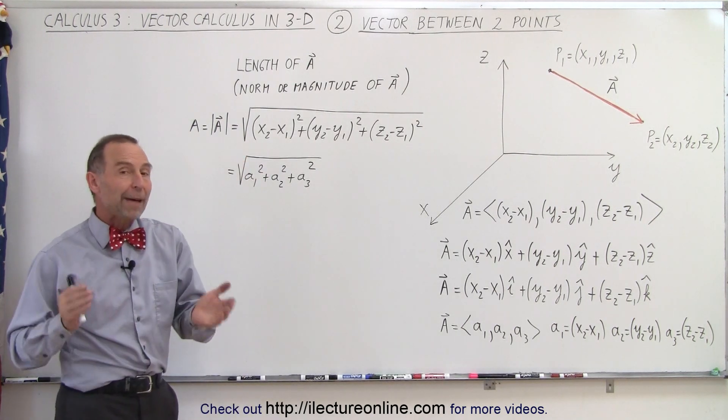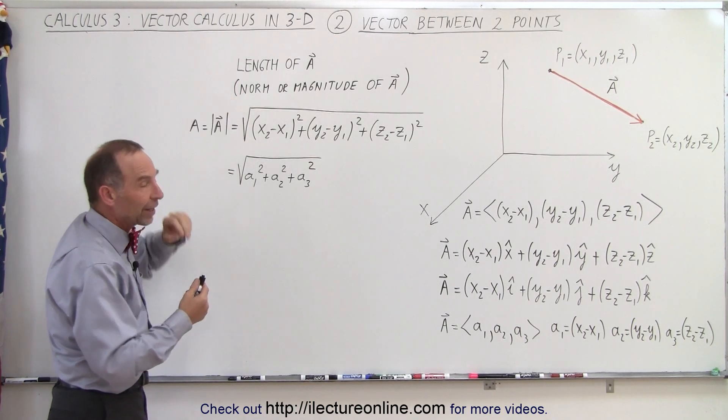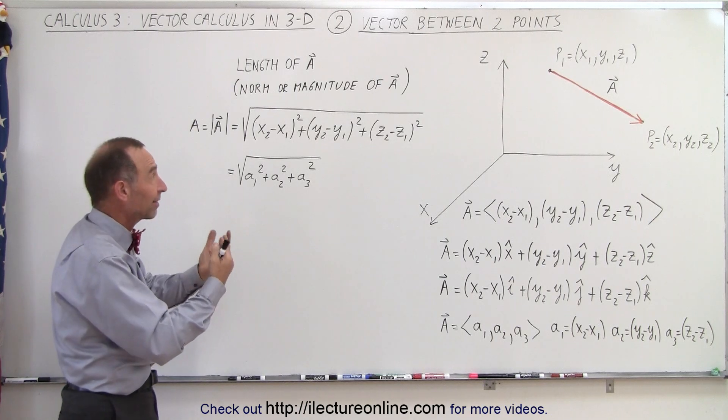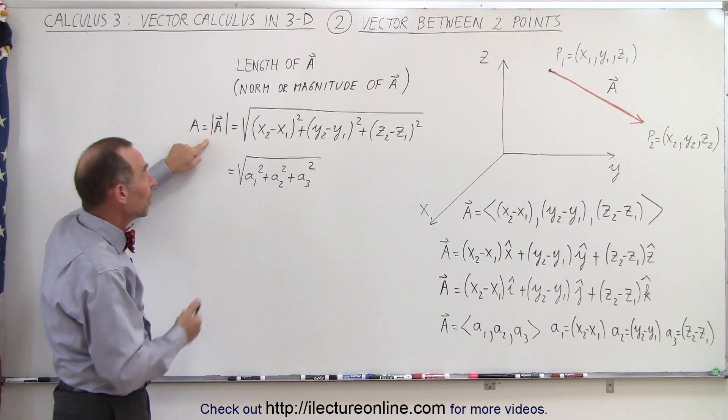If you want to know the magnitude of the vector, in other words the length of the vector or the norm of the vector, there are different words you use for the exact same thing, simply the distance between the two points. We use the Pythagorean theorem in three dimensions.